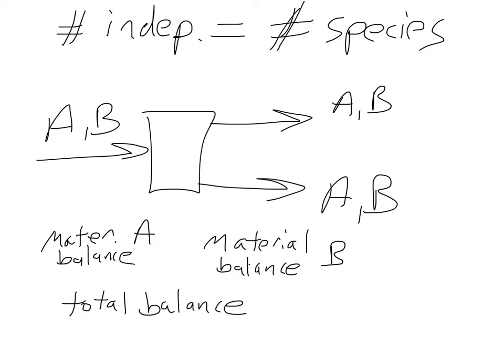So this is three different equations we could write. One, two, three, but only two of them are independent. Because it turns out that if we take the sum of material balance A plus material balance B, that equals the total balance. So we can't have three independent equations. We actually have two independent equations. So this is a key. Number of independent material balance equations is equal to the number of species. And we'll use that a lot when we're trying to analyze our problem and look at our degrees of freedom, whether we can solve the system we're interested in.